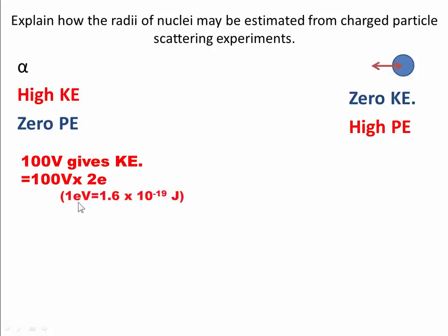So we have 100 volts times by 2 times the charge. You know that 1 electron volt is 1.6 times 10 to the minus 19. So we end up with 3.2 times 10 to the minus 17 joules. This will be converted into the potential energy. The kinetic energy loss will be the potential energy gained.